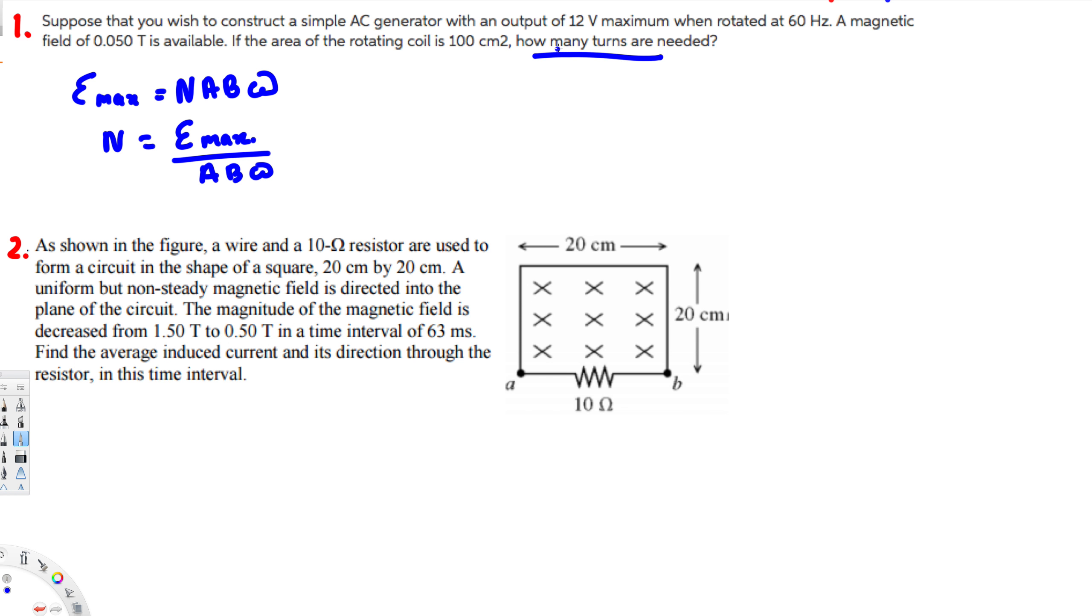Here, EMF maximum is provided right here: 12 volts. The area is in centimeters. Now to convert this one into meters, we have to remember that one centimeter is equal to 10 to the power of minus 2. So if it's centimeter square, we have to multiply by 10 to the power of minus 4. Magnetic field is provided. Omega we don't have that.